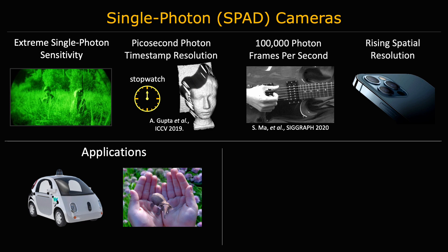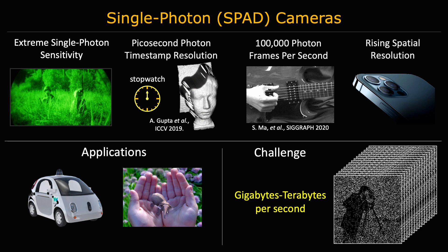Moreover, their rising spatial resolution makes them a good sensing candidate for emerging applications. However, one major challenge that these cameras face are the unmanageable data rates that the sensor outputs, since they are capturing one photon per pixel at a time at extremely fast rates.